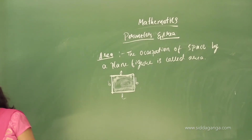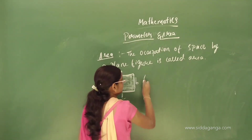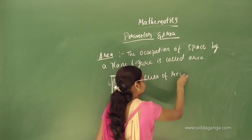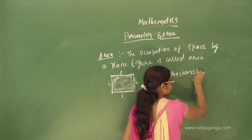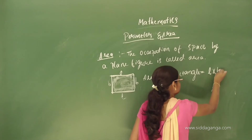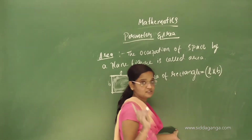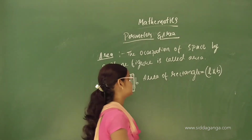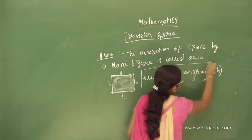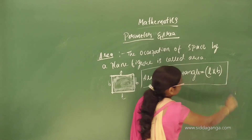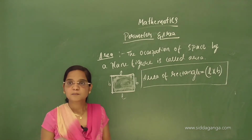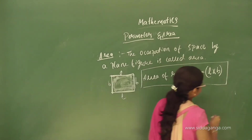The area formula is length into breadth. So, area of rectangle is equal to length into breadth. The unit is very important — it becomes square units.